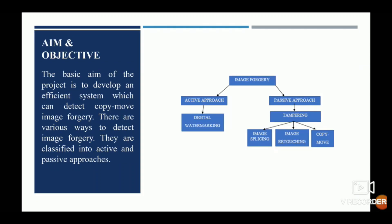A basic aim lies in developing an efficient system. There are two approaches: one is the active approach, which is simply digital watermarking — we can detect forgery by checking the watermark. The other is a passive approach, which is quite tough. It covers three types of tampering: image splicing, image retouching, and copy-move. Image splicing is copying a part of one image and pasting it onto a different image.